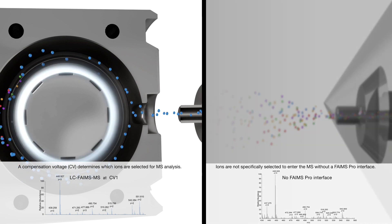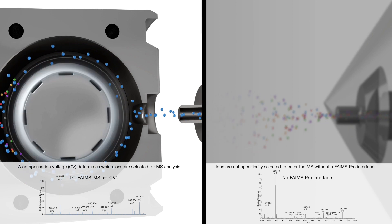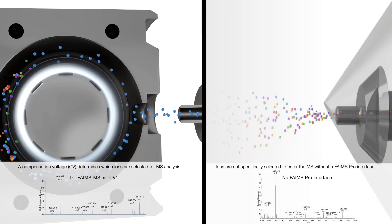The mass spectrum on the left shows the unique sets of ions measured using the FAIMS Pro interface that may or may not be detected in the full scan mass spectrum shown on the right.